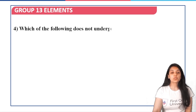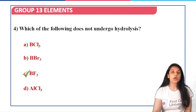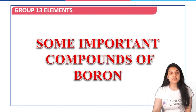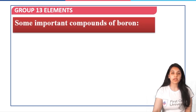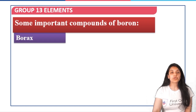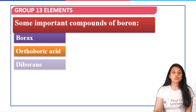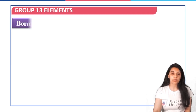The boron halide that does not undergo hydrolysis is BF3, which is the correct answer. Moving to the second topic: important compounds of boron. The first important compound is borax, followed by orthoboric acid, and then diborane. Borax is a white crystalline solid.